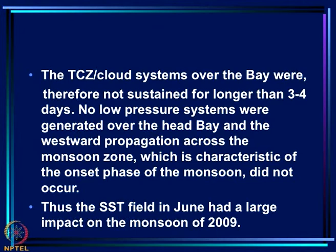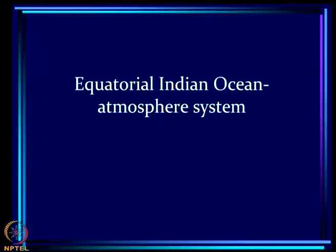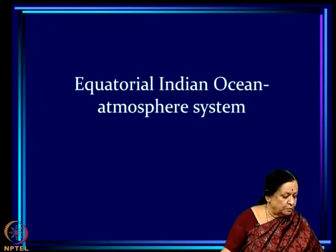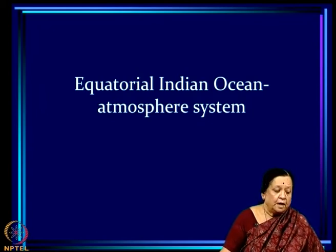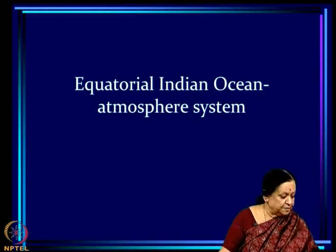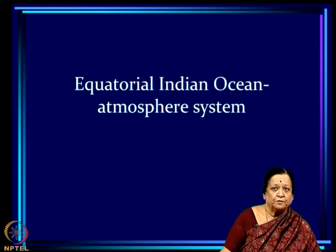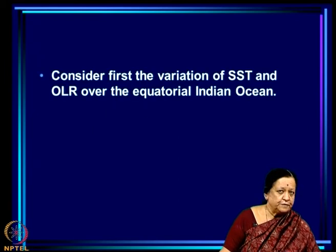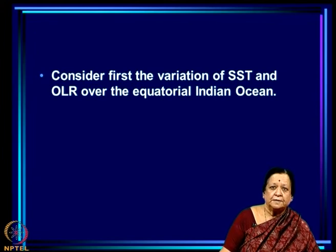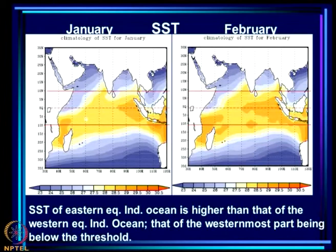Now I will move from the Bay of Bengal and Arabian Sea to the equatorial Indian Ocean atmosphere system. So far we have been talking about the north Indian Ocean comprising the Arabian Sea and Bay of Bengal. Now let us consider the variation of SST and OLR over the equatorial region.